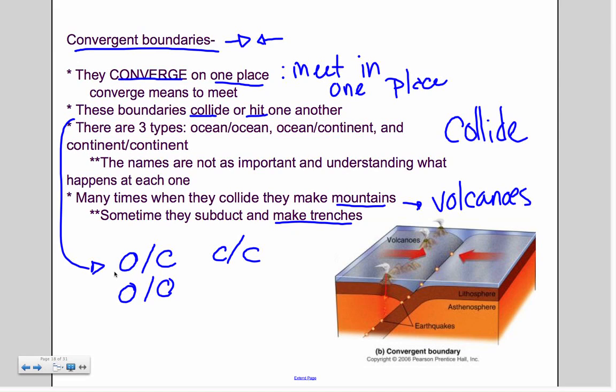Convergent boundaries, this is where they converge on one place. They collide or hit each other. There are three types. There's ocean to ocean, ocean to continent, and continent to continent. The names are not as important as what happens at each one. You really just need to understand that when it's a convergent boundary, they come together. And we have these three shorthands. When they collide, they make mountains, sometimes volcanoes, and trenches.